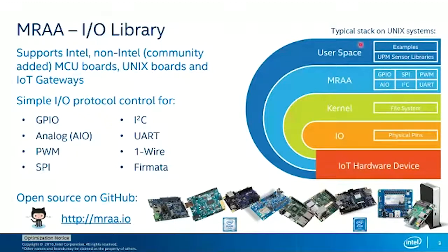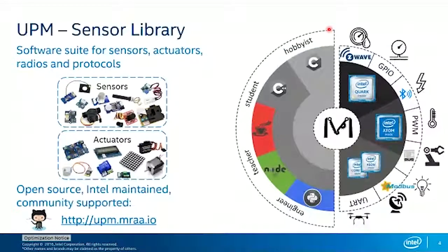On top of all that, we have our user space libraries — our UPM sensor and actuator libraries. UPM is really a collection of modules, libraries, or drivers for sensors, actuators, a couple of radios, and a few protocols. UPM is largely based around MRAA and has it at its core. Not all drivers use MRAA per se, but most of them do to access those IOs available on your board.